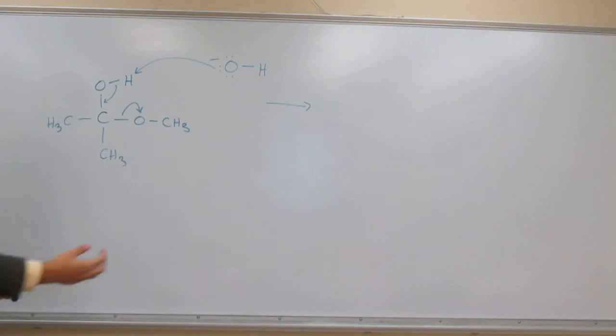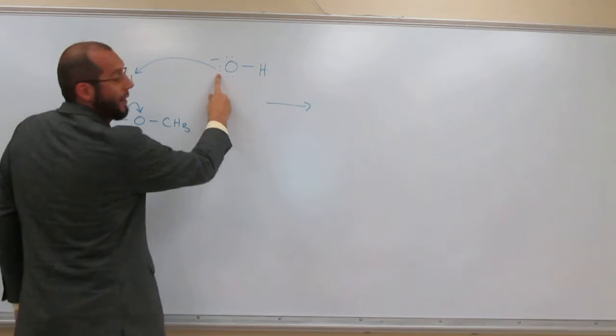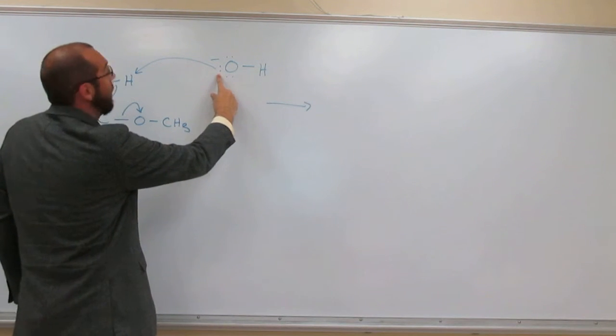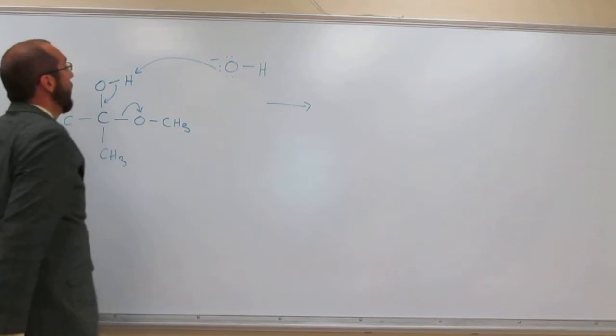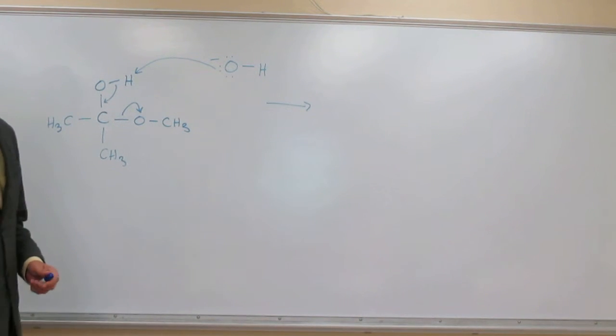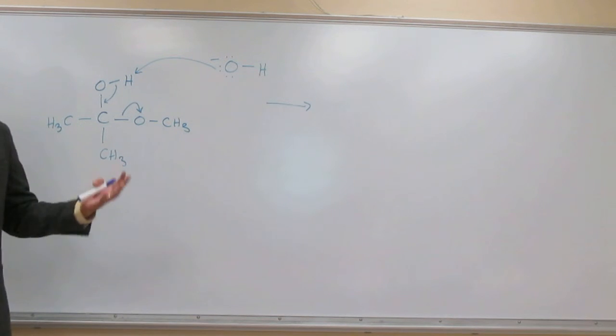That's like an acid-base reaction. In fact, that's what's happening here, is these electrons are like Inspector Gadget arm. They're going and grabbing that hydrogen and pulling it back. In fact, that's what you want to always think of the arrows as doing.